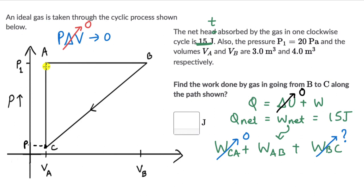Work done in AB, now this is AB, it has one pressure and the volume is changing. So let's use P·ΔV for this one. P over here is 20 pascals and ΔV will be 4 minus 3, Vᵦ minus Vₐ. So 4 minus 3 is 1, this comes out to be equal to 20 joules.